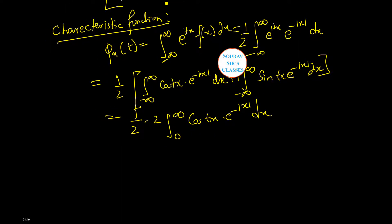Therefore, psi_X(t) is equal to integration from zero to infinity e to power minus x cos(tx) dx, which is equal to one minus t squared...